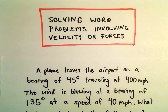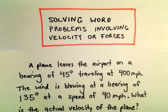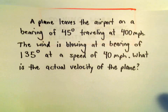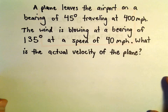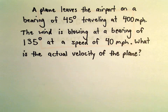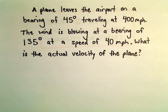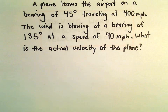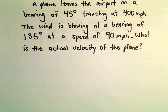In this problem, we've got what is probably a slightly more complicated problem the first time you see something like this. We've got a plane that leaves the airport on a bearing of 45 degrees traveling at 400 miles an hour. So maybe we can sketch a little diagram here as we go for what's going on.